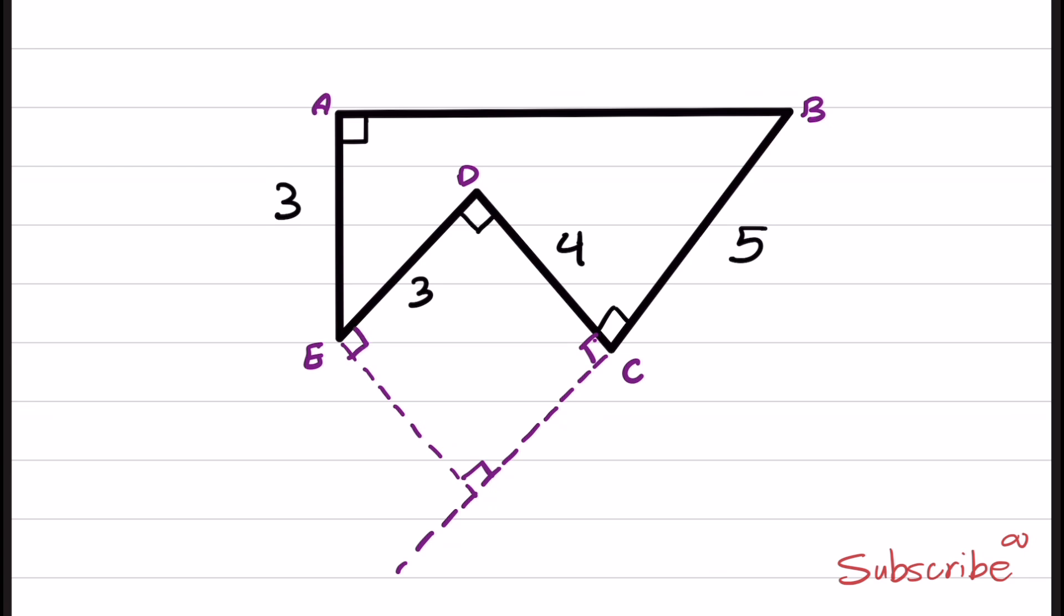And if we have a shape like this, which has four right angles and two sides that don't have the same length, we basically have a rectangle here. This part is 4, and this part is 3. I'm going to name the intersection of these two lines as O.